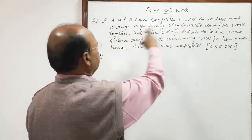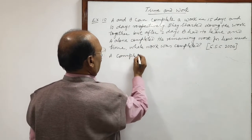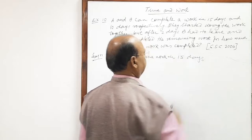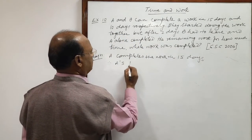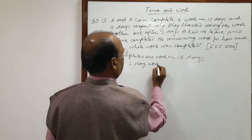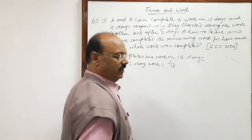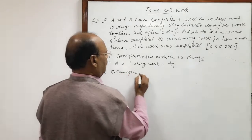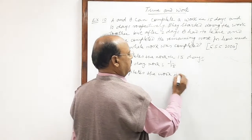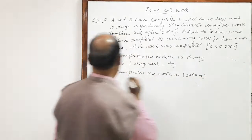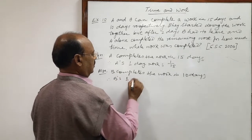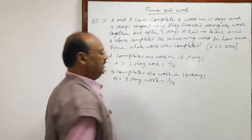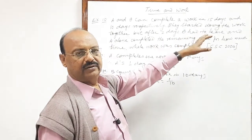A and B can complete a work in 15 days and 10 days respectively. A completes the work in 15 days, therefore A's one day work is the reciprocal: 1/15. Similarly, B completes the work in 10 days, therefore B's one day work is 1/10.